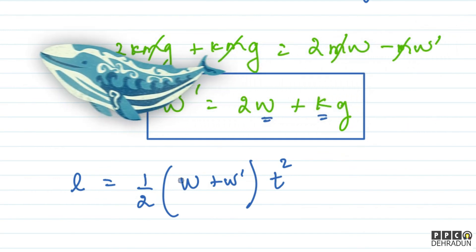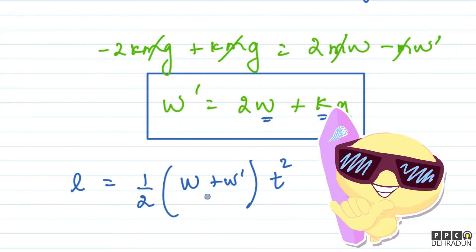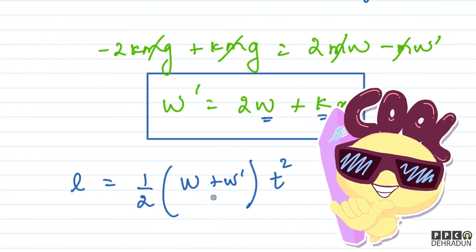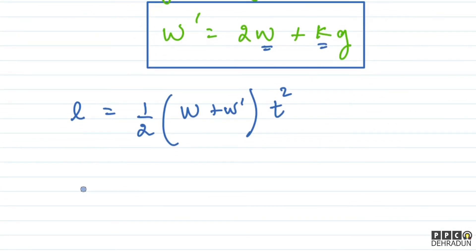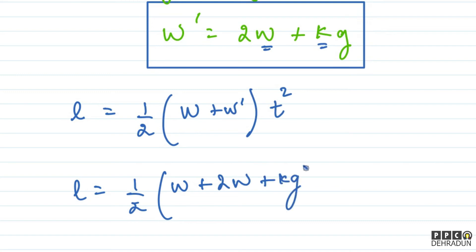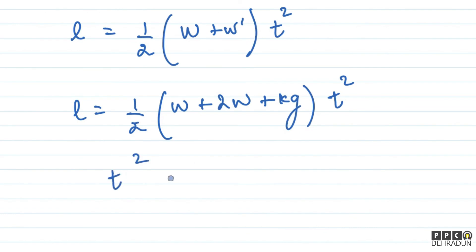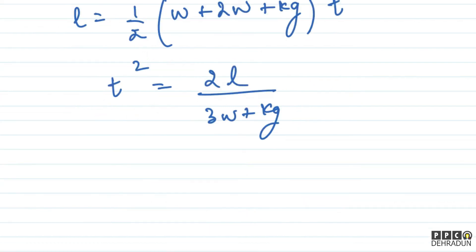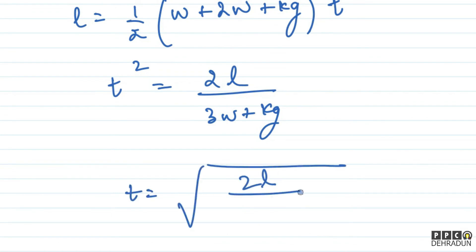So: L = ½ × (W + W') × t², which gives L = ½ × (W + 2W + kg) × t² = ½ × (3W + kg) × t². Therefore t squared equals 2L divided by (3W + kg). So our final answer is t = √(2L / (3W + kg)).